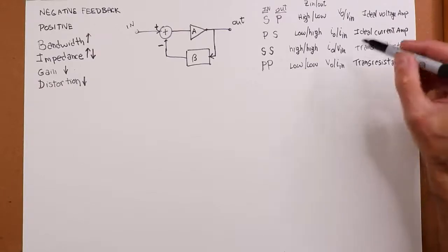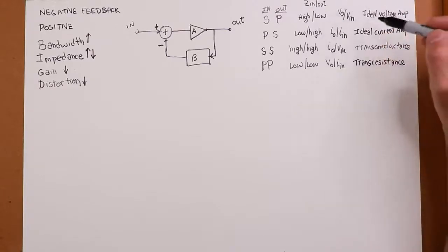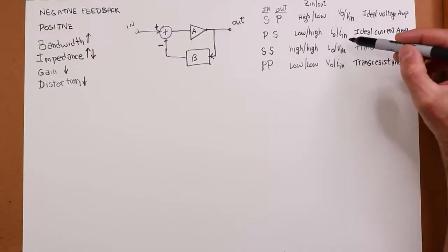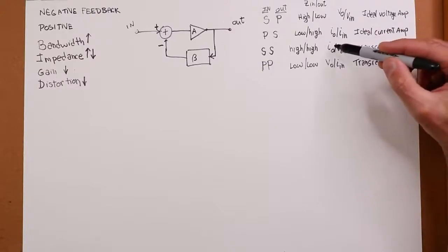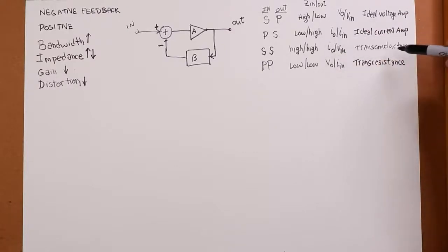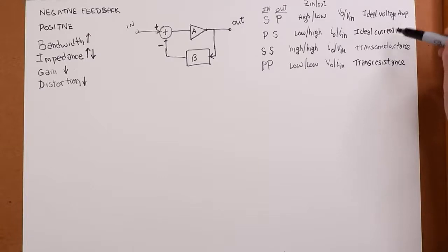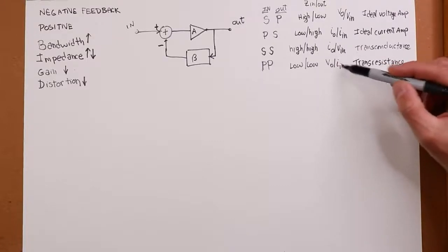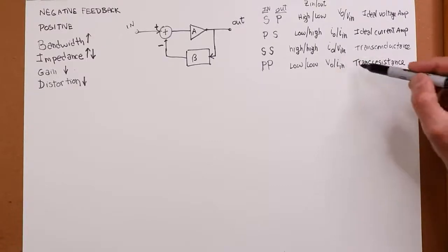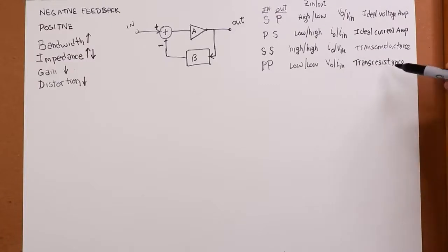To reiterate: we have a voltage-controlled voltage source — the ideal voltage amplifier; a current-controlled current source — the ideal current amplifier; a voltage-controlled current source — the transconductance amplifier, with a characteristic in Siemens, since it's amps over volts; and finally a current-controlled voltage source — the transresistance amplifier, which has units of ohms.